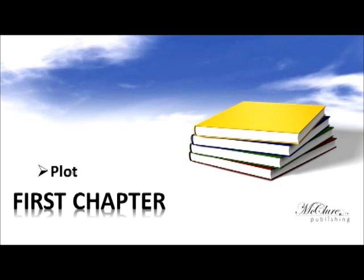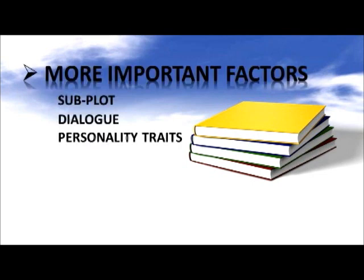How important is it that the character accomplishes the goal? Descriptions of your characters should be very descriptive. A subplot is a secondary plot strand that is a supporting side story for the main plot. Subplots may connect to the main plot in either time and place or thematic significance. Subplots often involve supporting characters. Each character should account for the reaction of the characters involved.